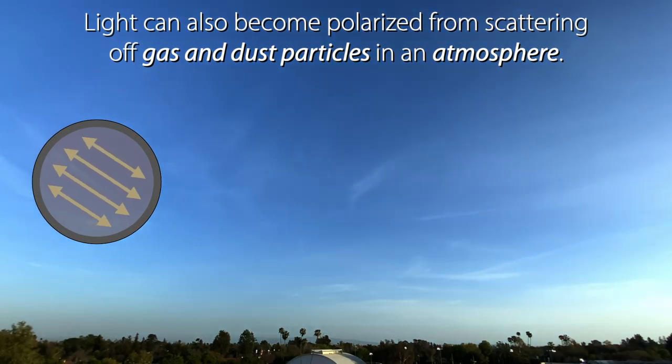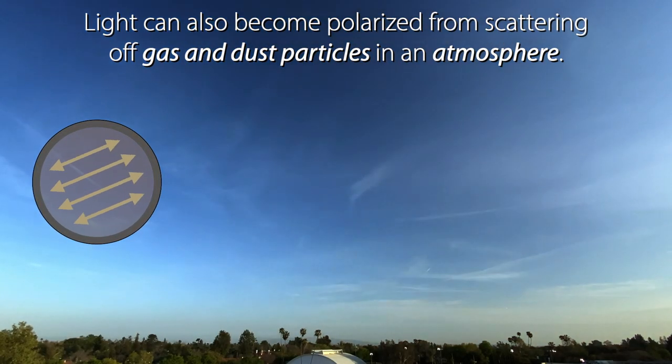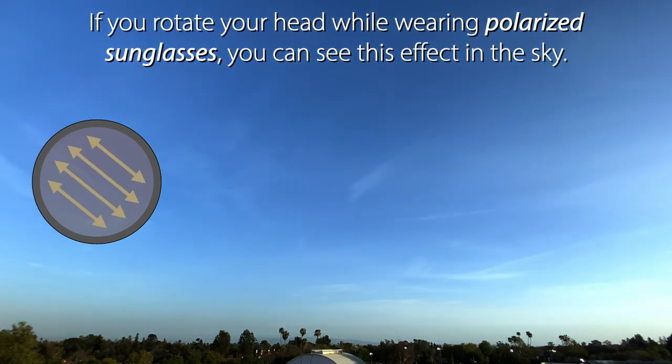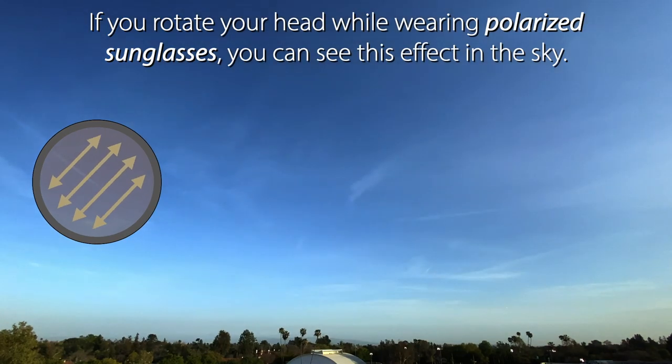Light can also become polarized from scattering off gas and dust particles in an atmosphere. If you rotate your head while wearing polarized sunglasses, you can see this effect in the sky.